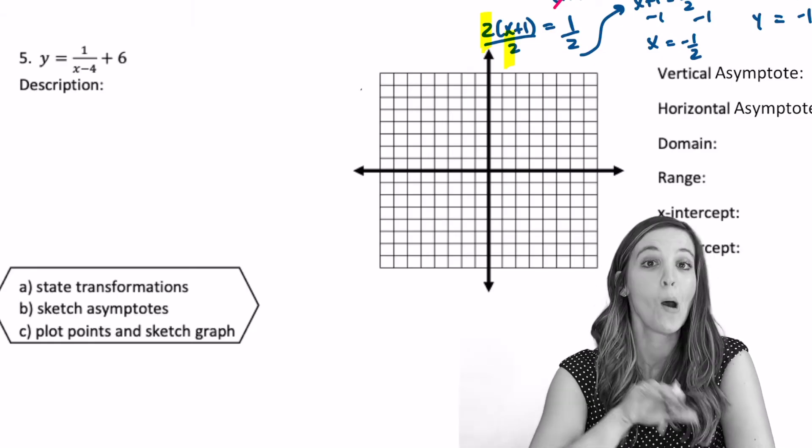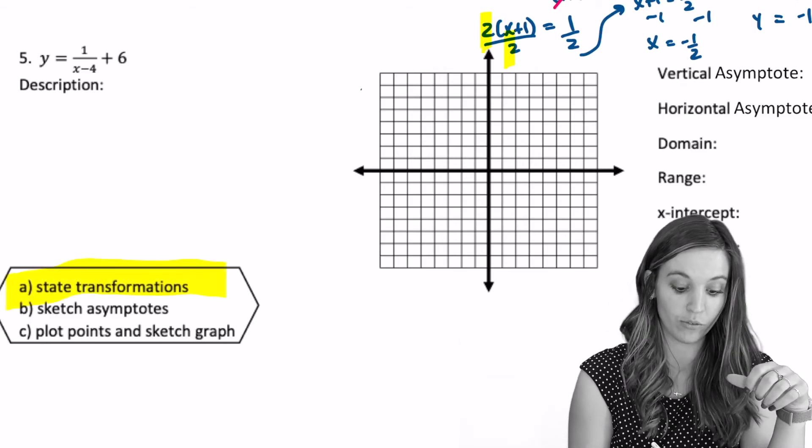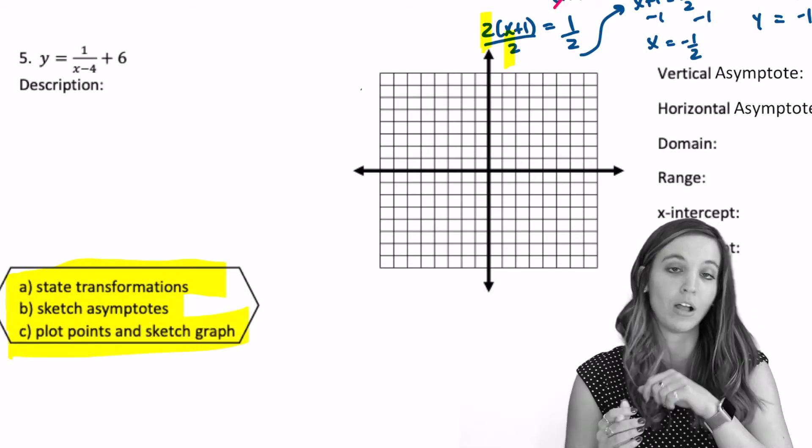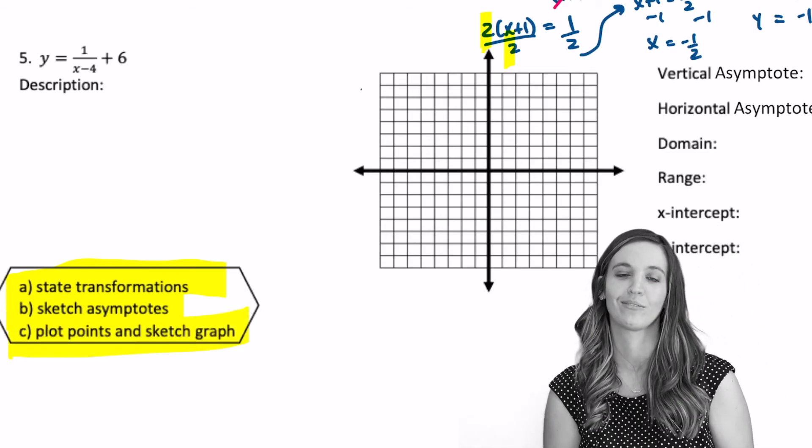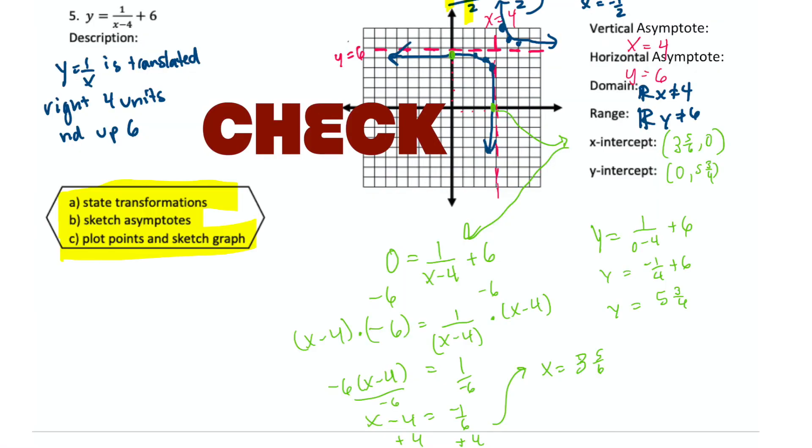And now, one for you to try. Pause the video. Try the whole problem. Remember your steps. State the transformations. Sketch the asymptotes. Then plot the points and sketch the graph.